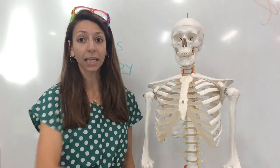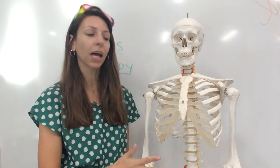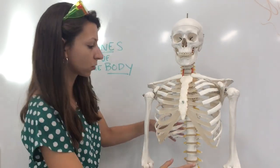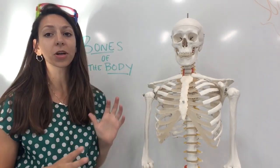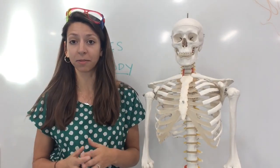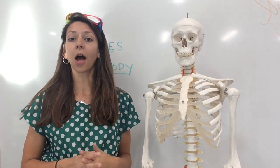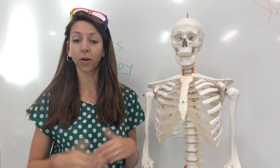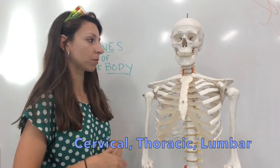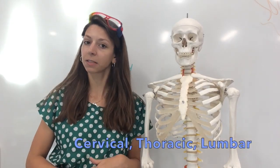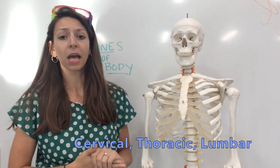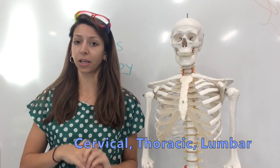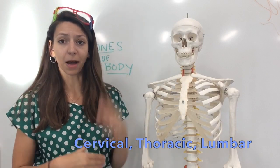Since we're looking at Fred's anterior side, we're not seeing quite all of the vertebrae, but the vertebrae are very important. We're going to have three main types of vertebrae: our cervical vertebrae, sometimes abbreviated as C; our thoracic vertebrae; our lumbar; and of course the sacrum and the coccyx at the very bottom.